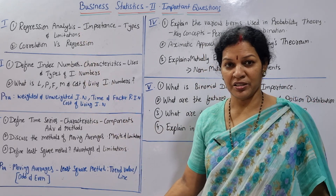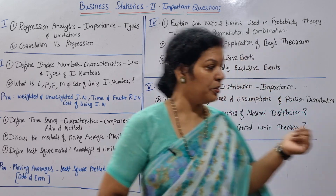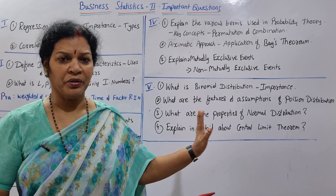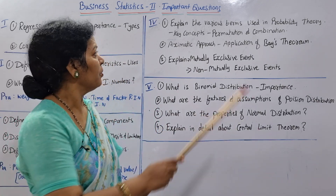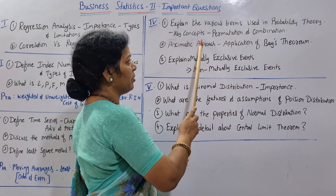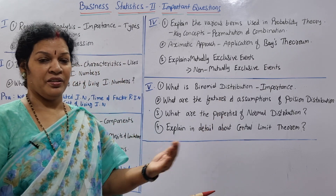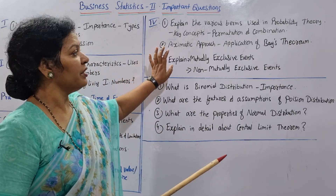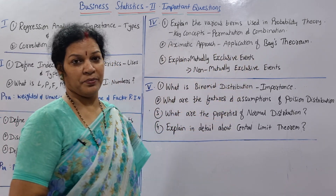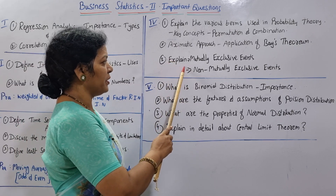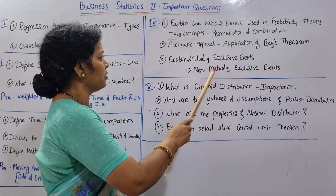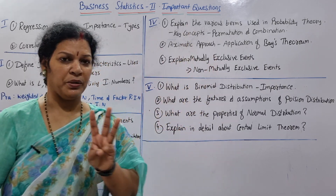The first three units are related to statistics. The last two units are purely mathematics. In the fourth unit: Explain the various terms used in Probability Theory — key concepts, permutations and combinations. Second: theories and approaches, including the axiomatic approach and application of Bayes' Theorem. Third: Explain mutually exclusive events and non-mutually exclusive events. Only three theory questions are expected for Unit 4.